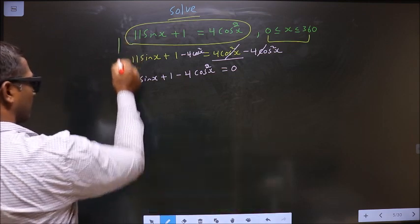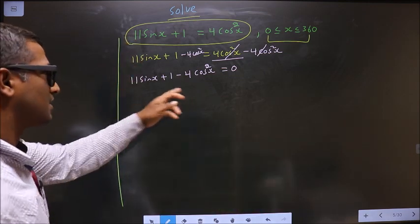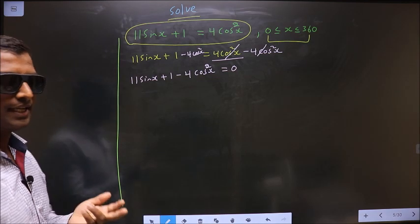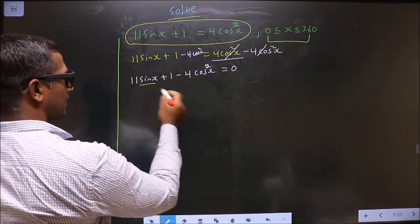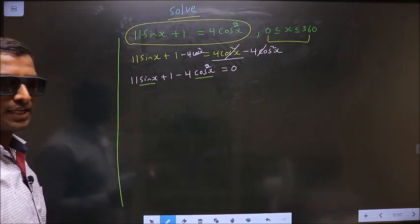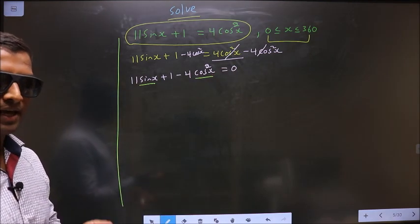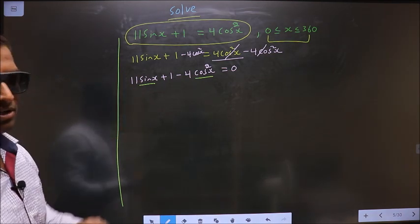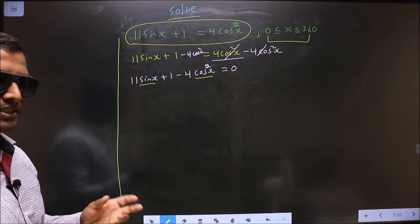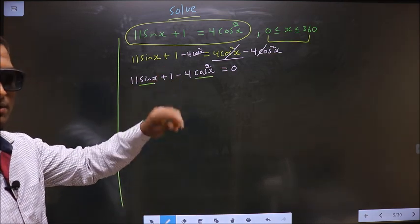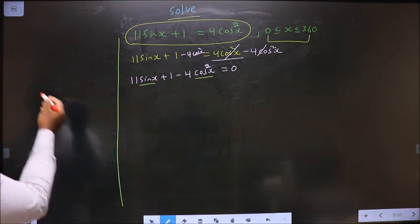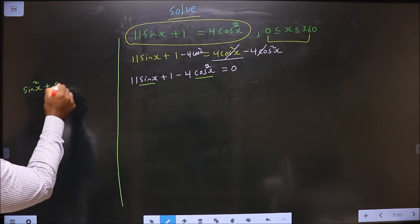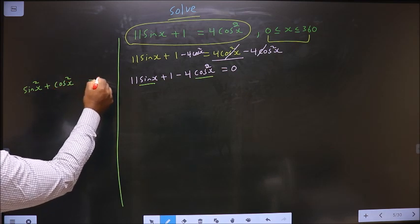In this trigonometry equation, we have two trigonometric ratios: sin x and cos x. But there should be only one for that to happen. I cannot convert sin to cos, but I can change cos square in terms of sin square with the help of this identity: sin square x plus cos square x equal to 1.